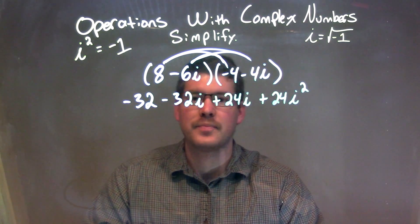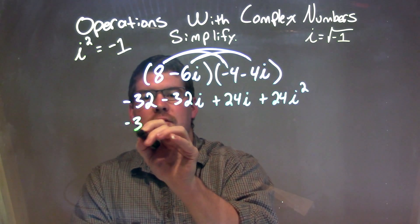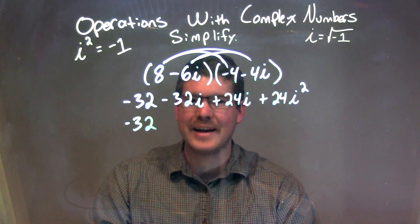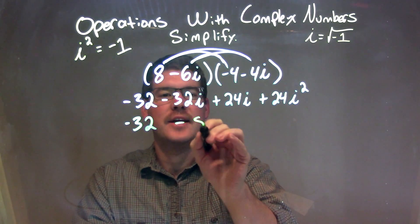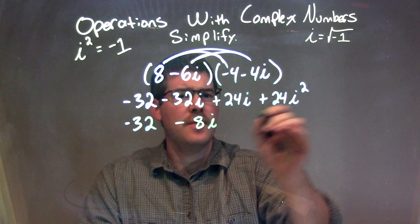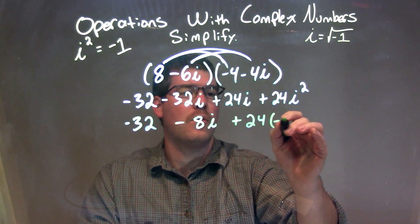So now what I'm going to do is combine our i's in the middle. Negative 32 comes down, and then we have negative 32i plus 24i is negative 8i. And then we bring down plus 24, but instead of i squared, we know that's negative 1.